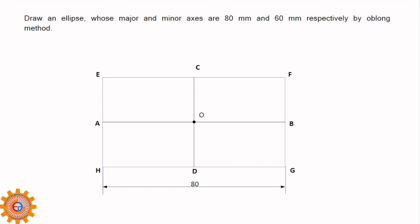I draw two lines and I complete the rectangle of length 80 and width 60, and join the midpoints of the rectangle. That I can get A, B and C, D. The corner points will be E, F, G, H.